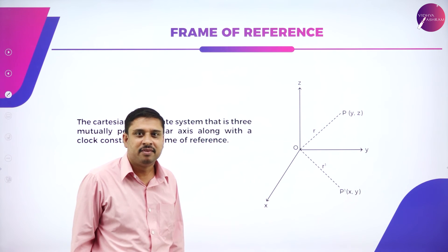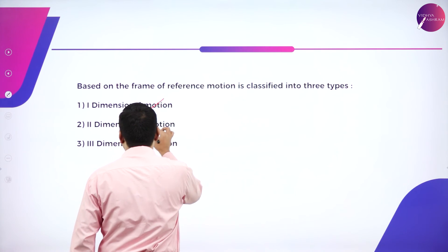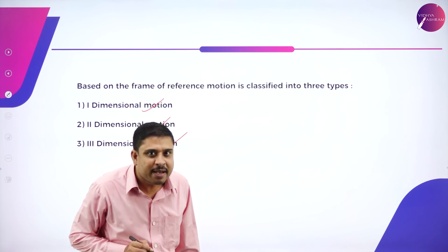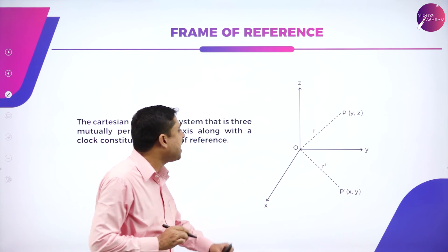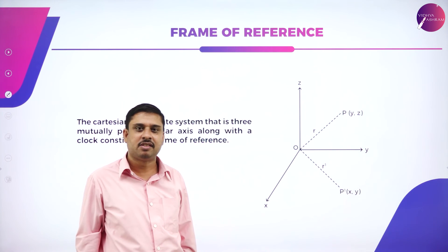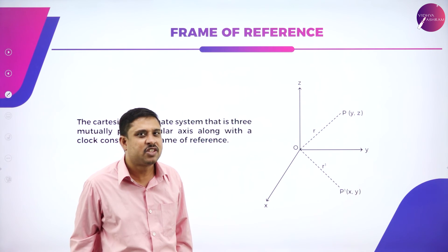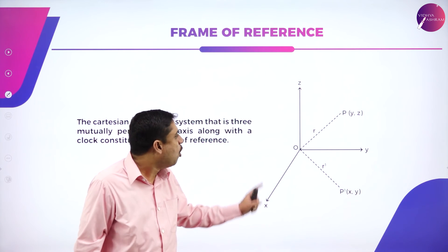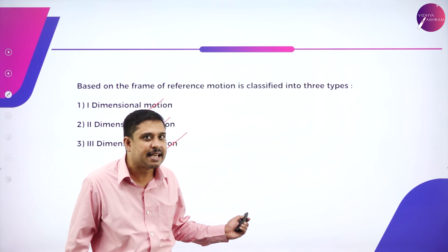There are three types of motion: one-dimensional, two-dimensional, and three-dimensional. This classification is done based on something called the frame of reference — a very interesting topic. I encourage you to look through your books and find out what these axes and frame of reference mean before the next session.